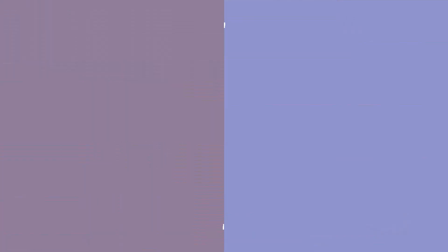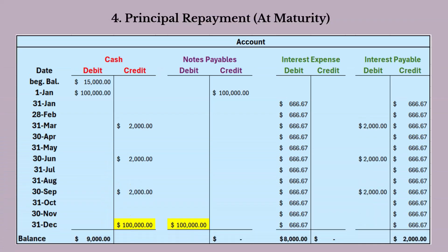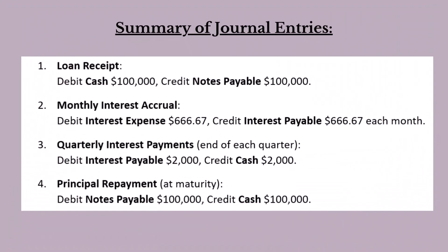The final journal entry comes at the end of the year. On December 31st, the loan matures and the $100,000 principal is due and repaid. Notes payable is debited to remove the liability from the books once the loan is paid off, and cash is credited to reflect the cash payment made to settle the principal. Here's a summary: at loan received, debit cash $100,000 and credit notes payable $100,000. For monthly interest accrual, debit interest expense $666.67 and credit interest payable $666.67. For quarterly interest payments, debit interest payable $2,000 and credit cash $2,000. At maturity, debit notes payable $100,000 and credit cash $100,000.